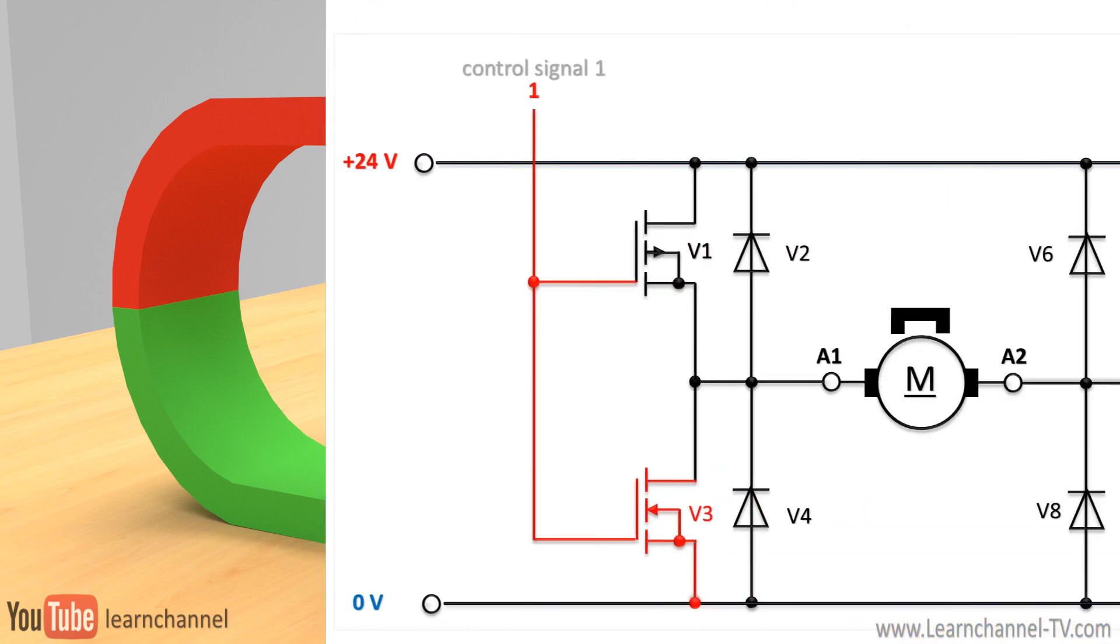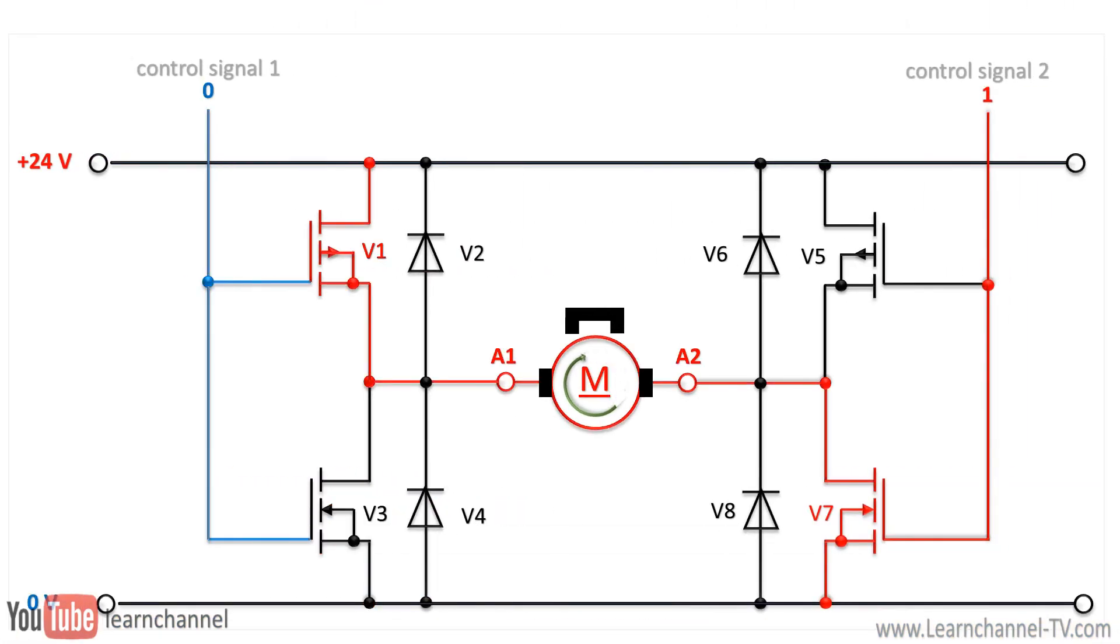For this purpose, the so-called H-bridge is used in practice as a power element. Transistors act as electronic switches which are mutually interlocked within a branch in order to avoid a short circuit.